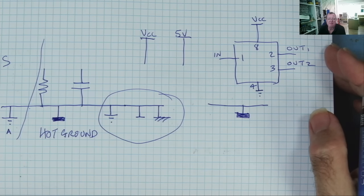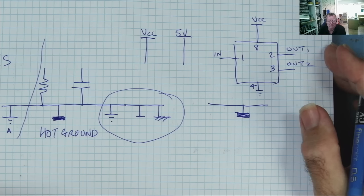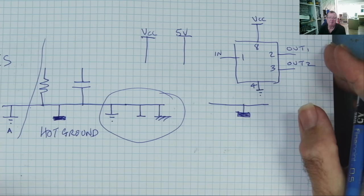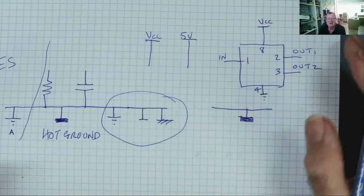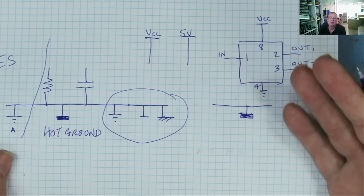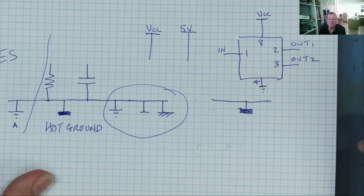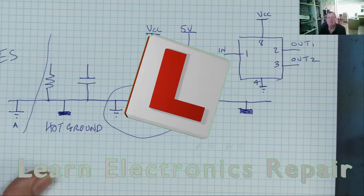Now we have all of the passive and pseudo-passive component symbols. Part 2 will look at all the active components we're likely to come across — and then we'll really have the alphabet of schematics, knowing all the symbols we're likely to find. Part 3 is the vocabulary of schematics: how these things join together, how to understand the circuits, how to read them. Hope you enjoyed Part 1 — Part 2 I think tomorrow. Bye for now.